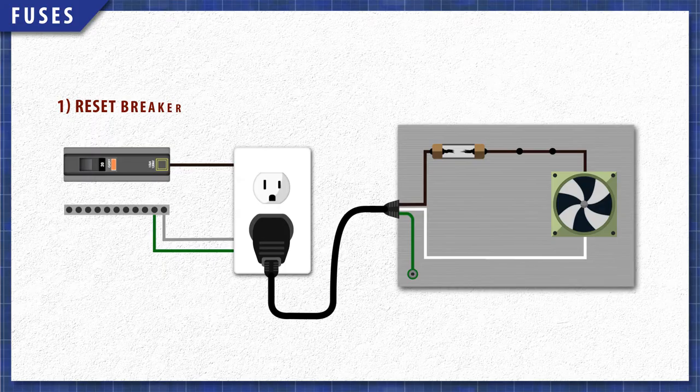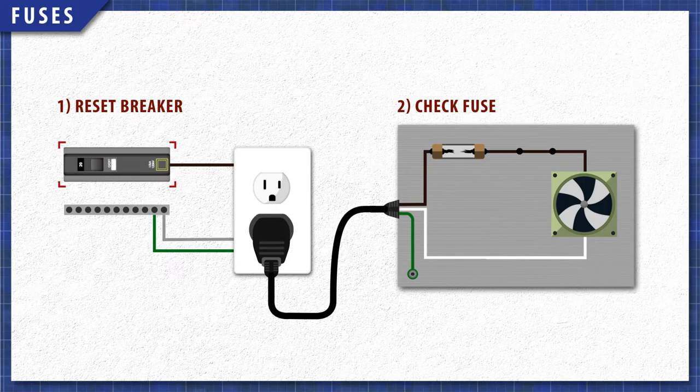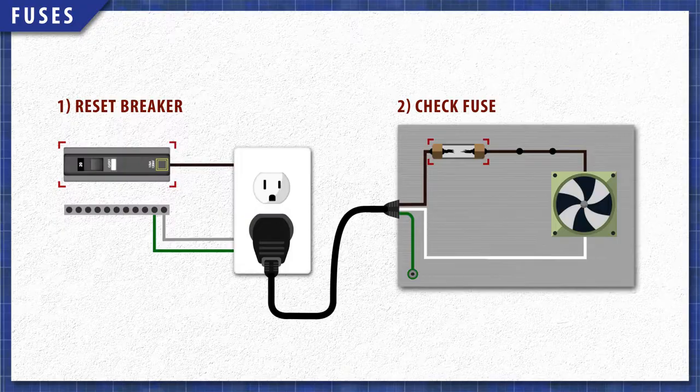If an appliance stops working completely, it's a pretty good sign that the fuse is blown. Now if you've reset your home's breaker and the appliance still doesn't have power, then check the fuse for continuity.